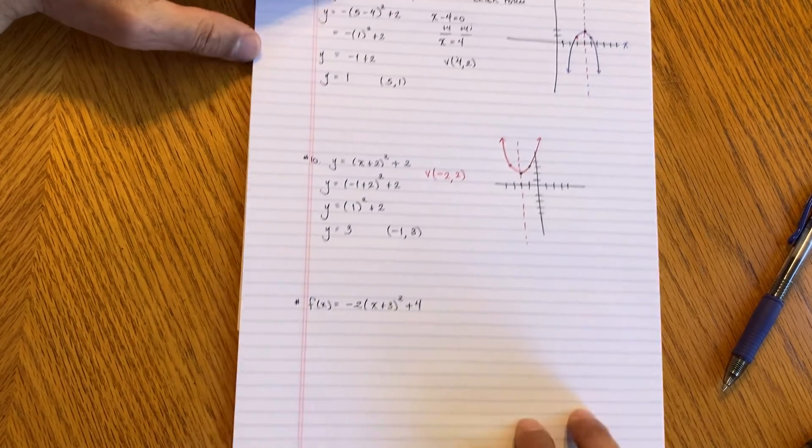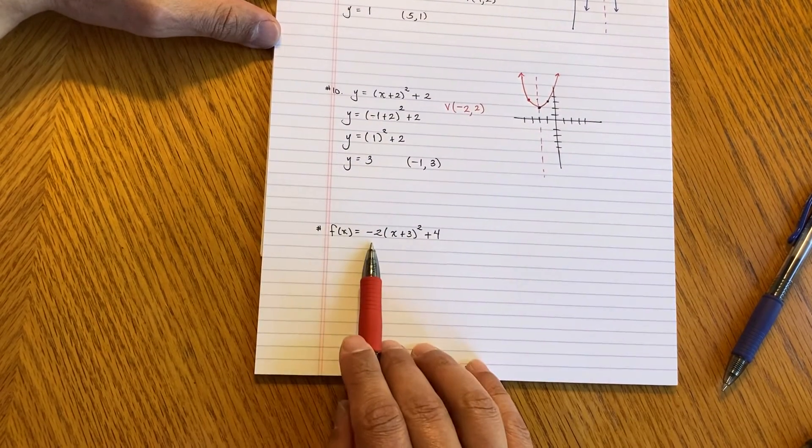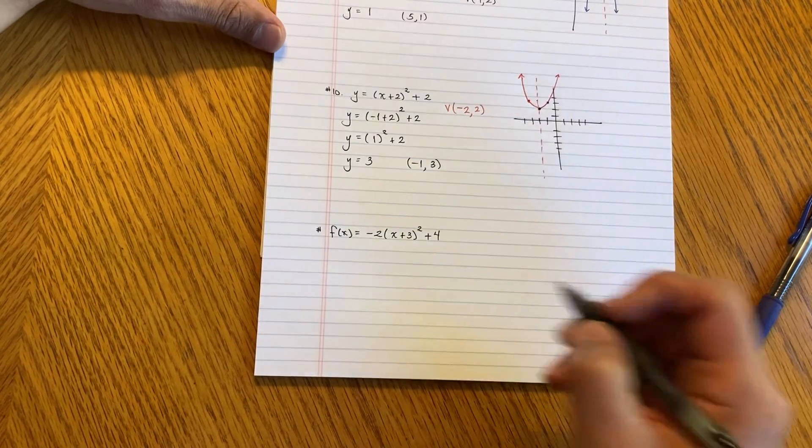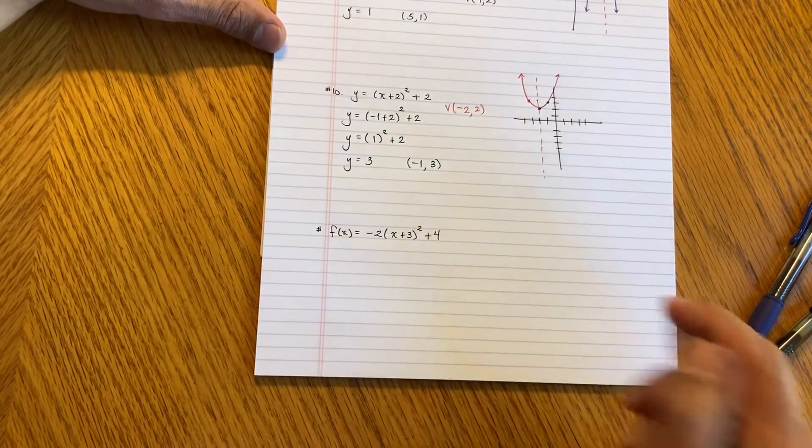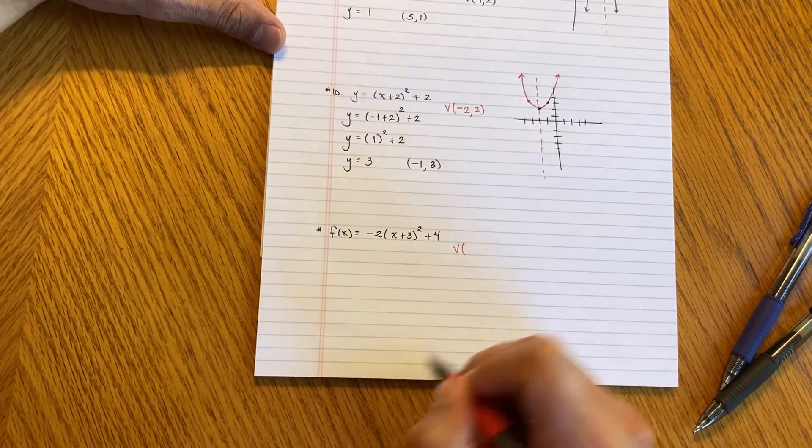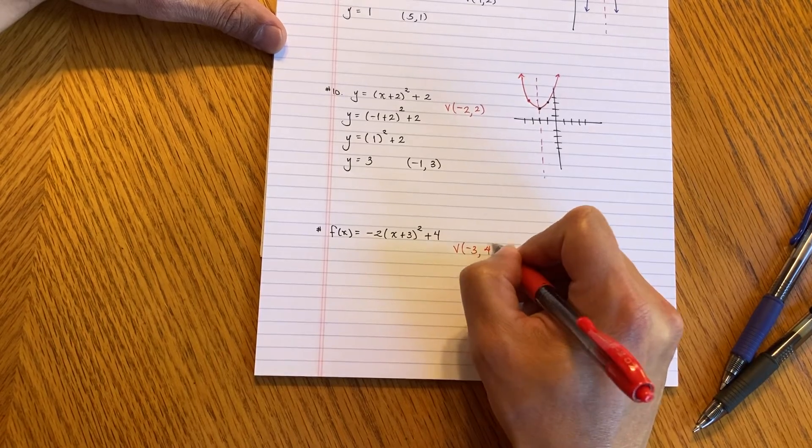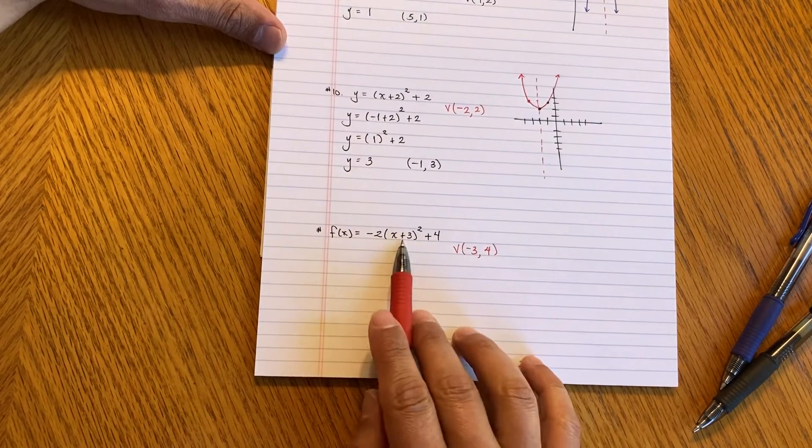Last one. Again, you notice what's in front. There's a negative, right? So I know this guy is going to be opening downward. Just by looking at it, can I tell my vertex? What do you guys think? Yep. It's going to be negative 3 and then positive 4. Remember, don't change this guy. Just change this guy right here.